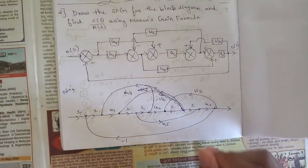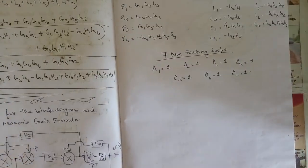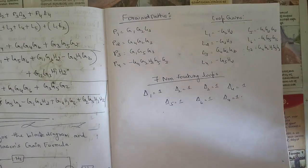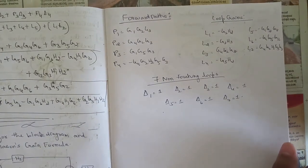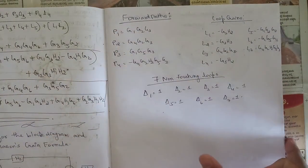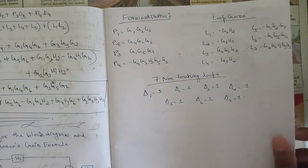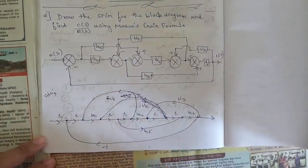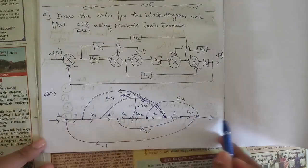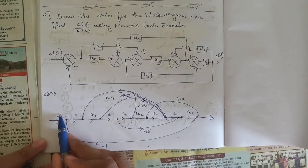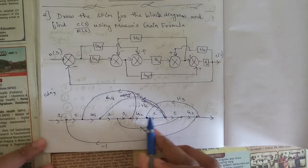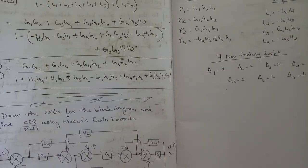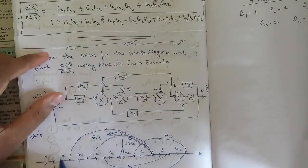Now let's write all the forward paths. The first forward path P1 equals G1·G2·G3. Looking at the figure, the first path goes through: 1 × 1 × G1 × 1 × 1 × G2 × 1 × 1 × G3, giving G1·G2·G3. The second path P2 is G4·G2·G3.